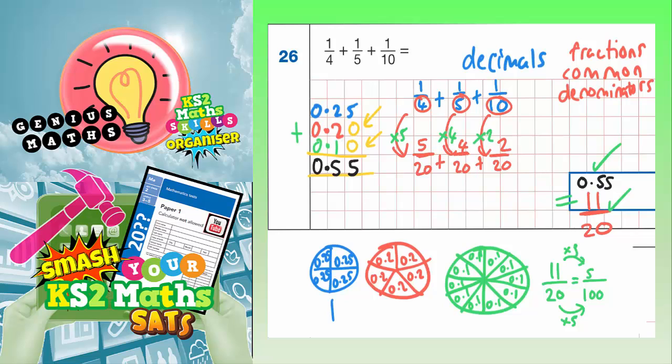And 55 hundredths is 0.55 as a decimal. So it does make sense when you think about it that these two answers are the same. 0.55 or 11 20ths.